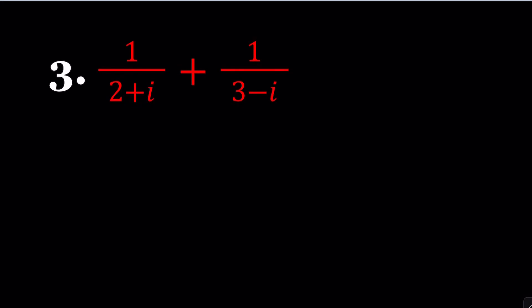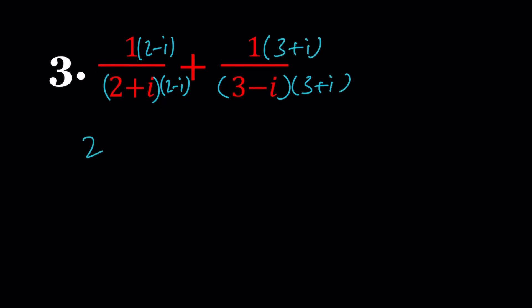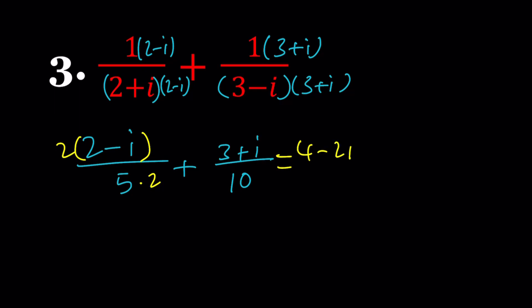Number 3 is fairly easy. You are supposed to simplify this expression. You can make a common denominator, but the easier way is using conjugates again. Let's multiply by 2 minus i on the first fraction and by 3 plus i on the second, which will get rid of the i's at the bottom. The numerator of the first gives 2 minus i, and the denominator is a sum of two squares: 4 plus 1, which is 5. The second fraction gives 3 plus i in the numerator, and 9 plus 1 gives 10 in the denominator.